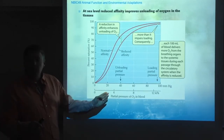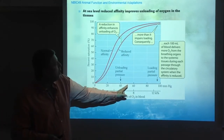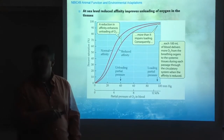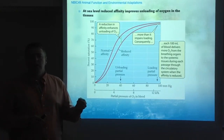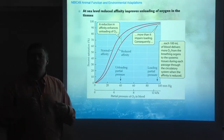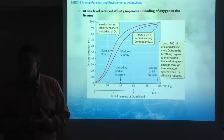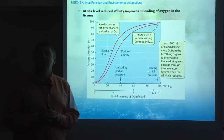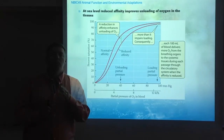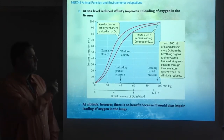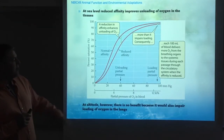As you reduce affinity and increase unloading, you are also decreasing loading. At the partial pressures found at altitude, there is also a difference in loading at the lung level. Nowadays, the change in 2,3-DPG that reduces oxygen affinity does not seem to have any beneficial effect. Apparently, there is no beneficial effect whatsoever from the increase in 2,3-DPG — no benefit of the reduction in affinity at altitude.